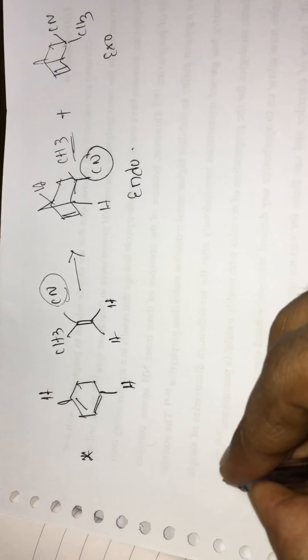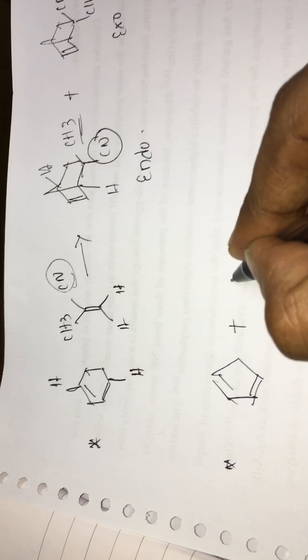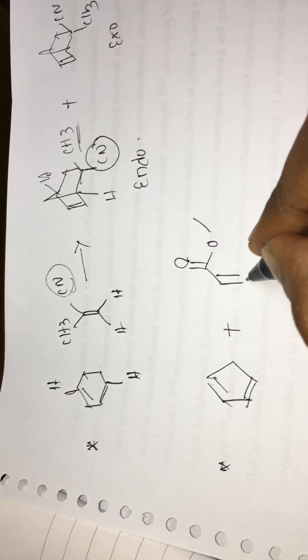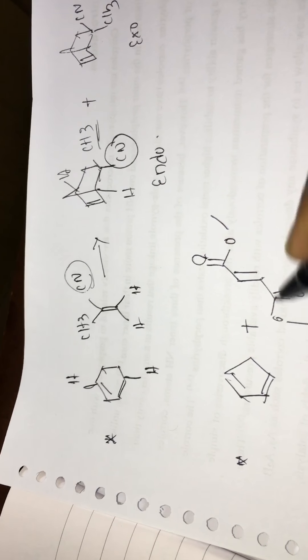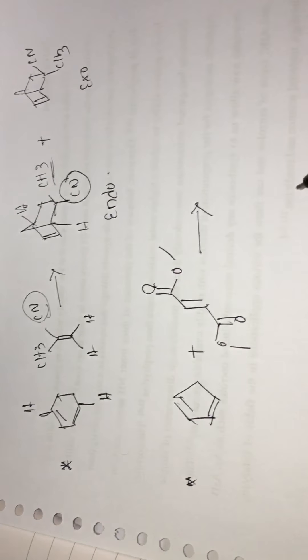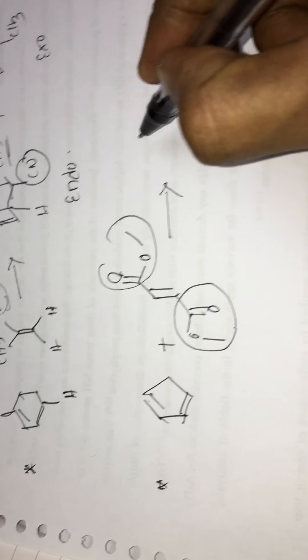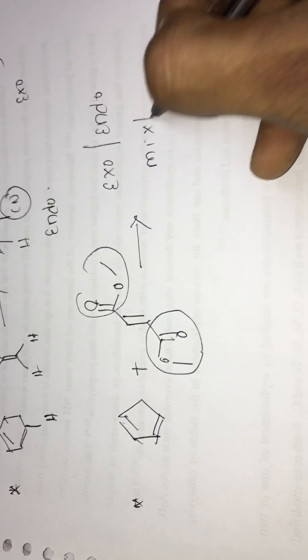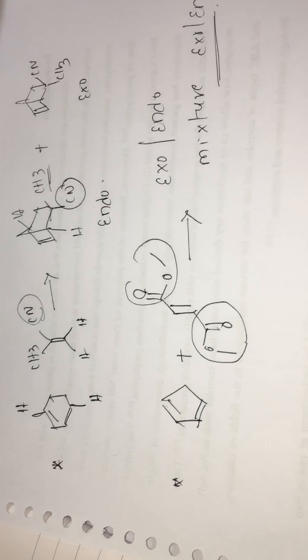In the fourth example, when we have a symmetric dienophile where both groups on the dienophile are the same, we cannot differentiate between exo and endo. So in this case we will get a mixture of exo and endo. These are the four kinds of examples in which we can predict the exo and endo products.